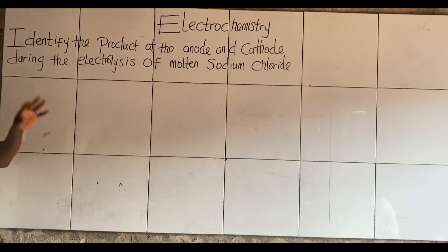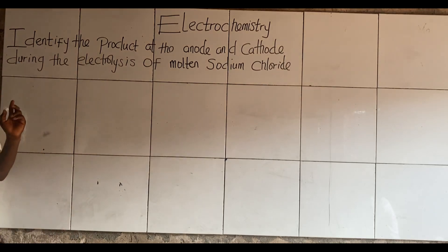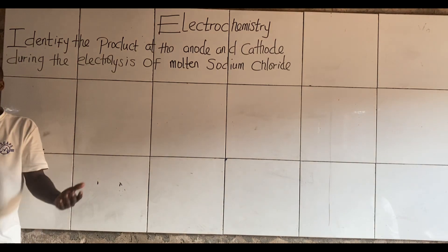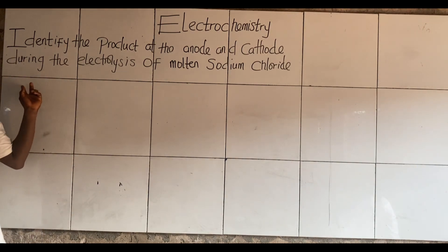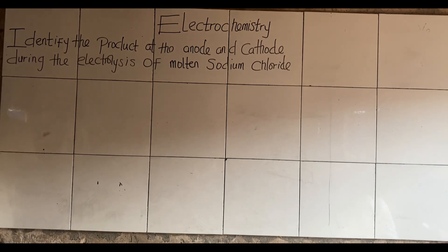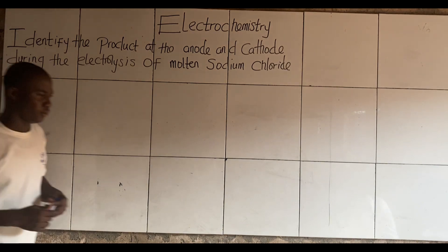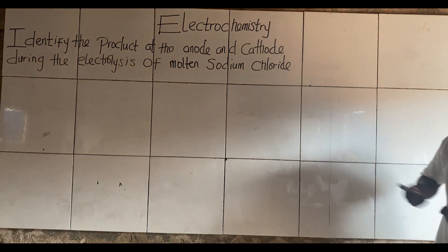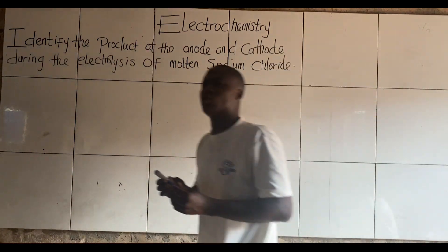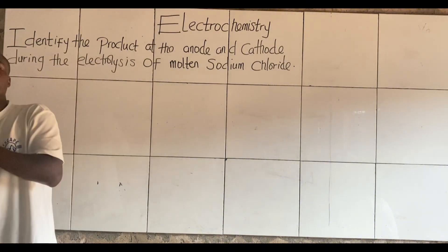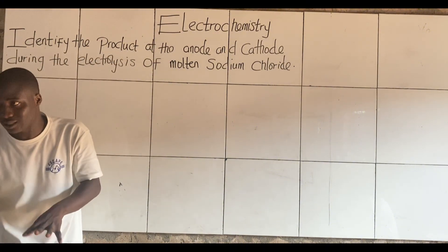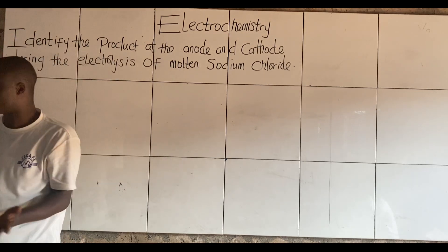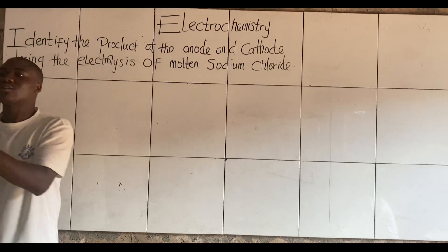Alright, so class, I'll be solving this question. I believe you can see it on the board. The question says, you guys should read from it. Identify the products and the amount of matter living in electrolysis and mortis for them to arrive. Now, looking at this question, for the sake of those who just joined this class, this question is on the topic electrochemistry, specifically electrolysis.